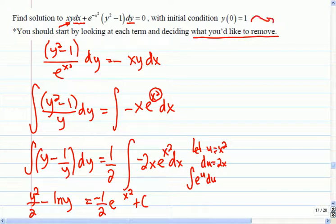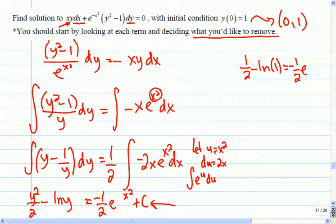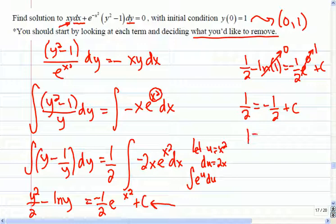So this point of the initial condition, this is the point (0,1). So we have to put in the point (0,1) in order to figure out what this constant is going to be here. So I'll substitute those values in. If I put in 1 for y, I get 1 half minus the natural log of 1 equals negative 1 half e to the 0 plus my constant. So e to the 0, that's just 1. Natural log 1, that's 0. So 1 half equals negative 1 half plus my constant. So my constant equals to 1. And there's no easy way to separate these here. I'm going to leave it in implicit form. So I would leave this as the relationship y squared over 2 minus natural log y equals negative 1 half e to the x squared plus 1.